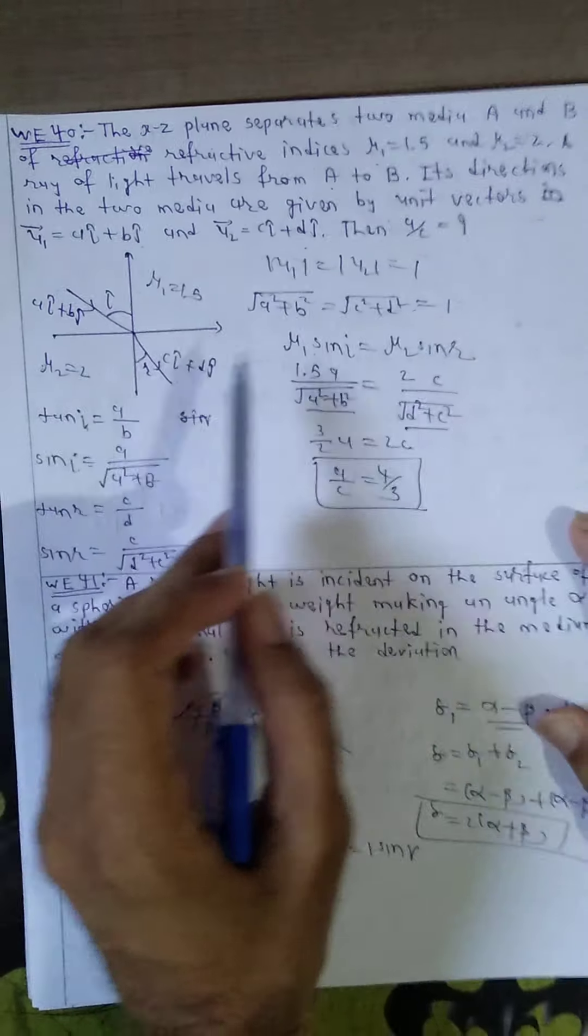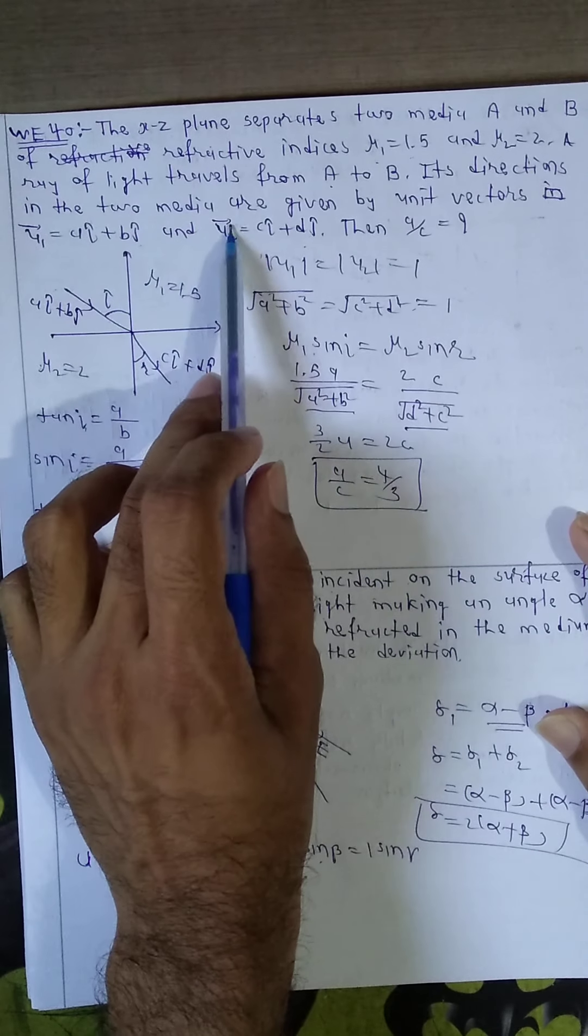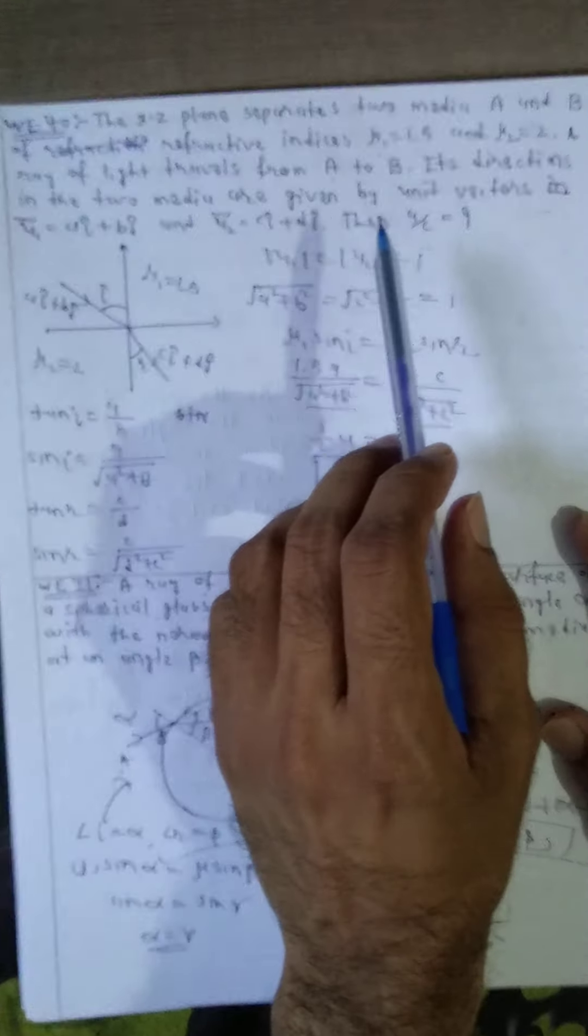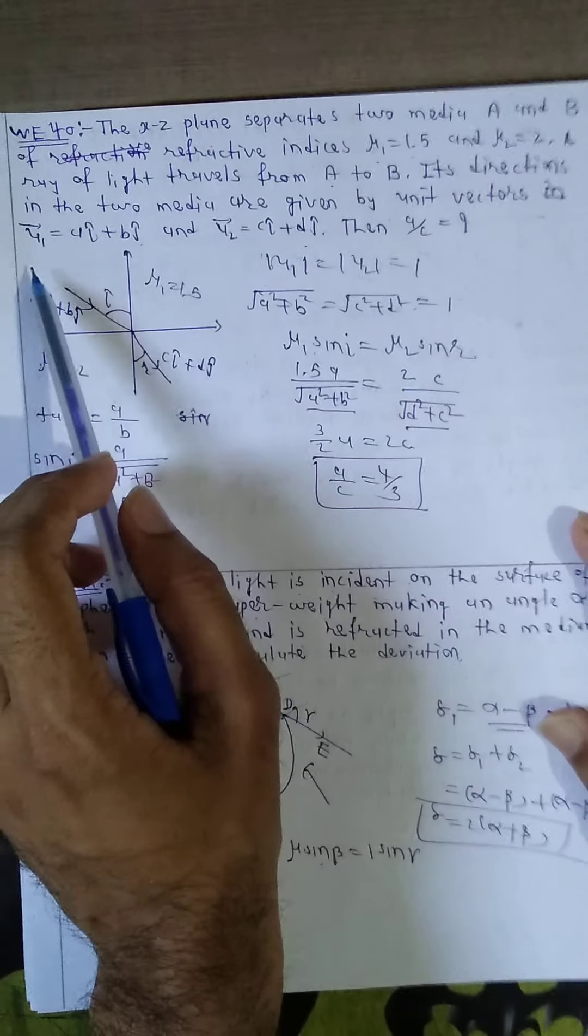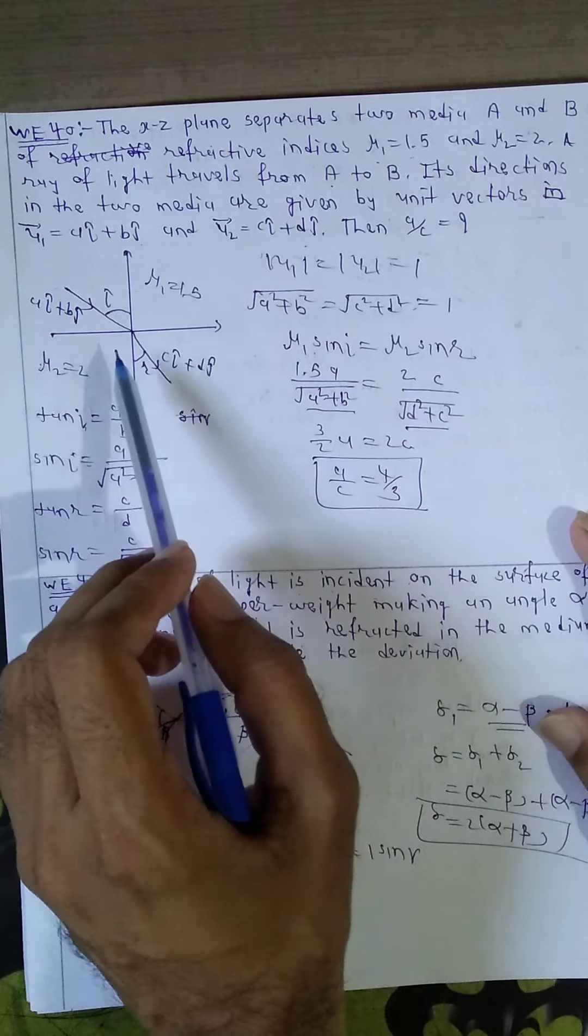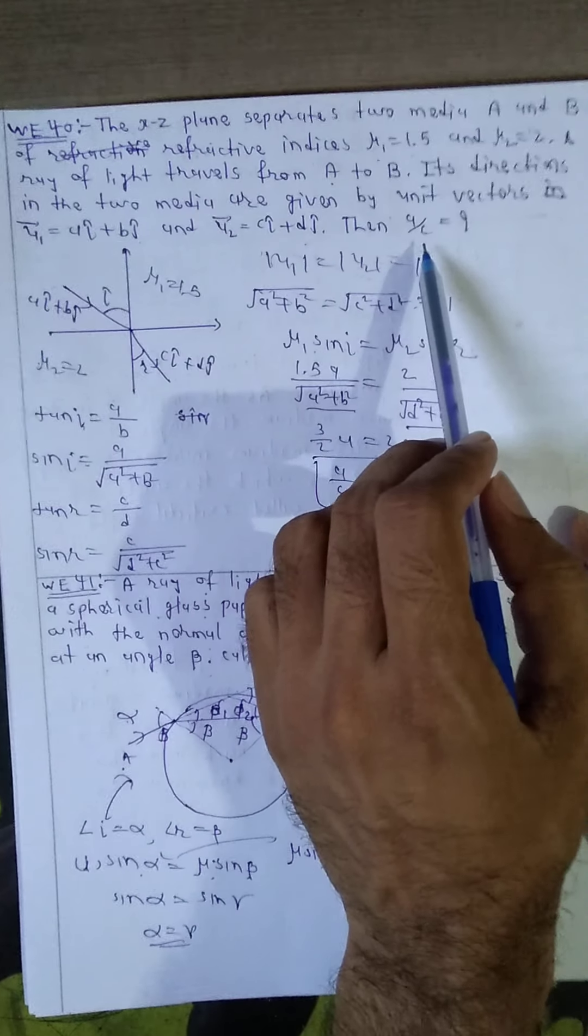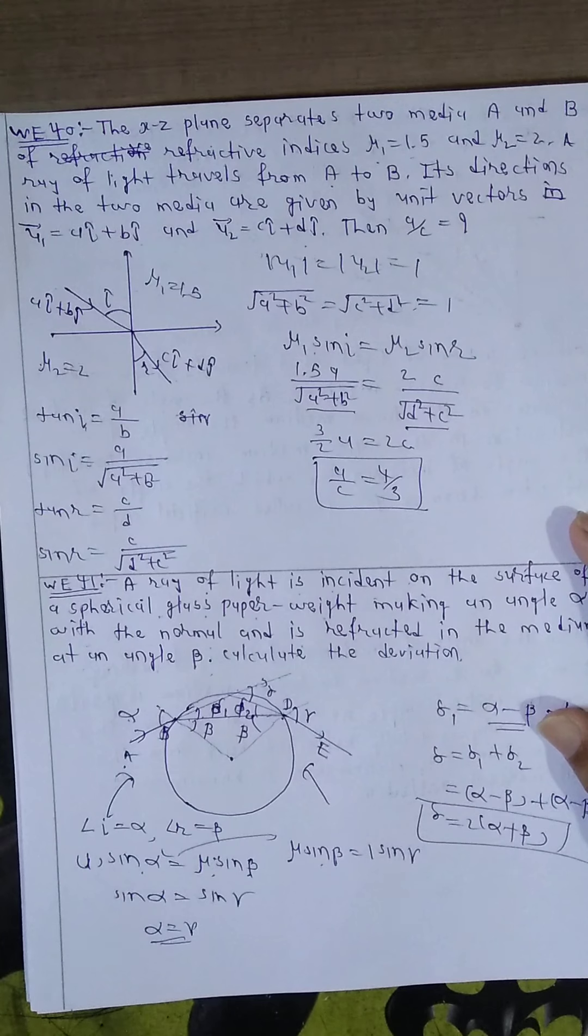The direction in the two media is given by unit vectors u1 equals ai plus bj, this is u2 equals ci plus dj, then find a by c.